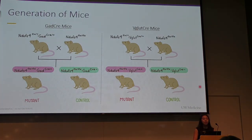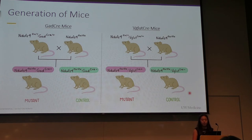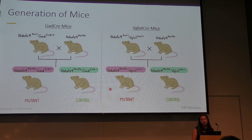To test our proposed hypothesis, we generated mutant and control GAD-CRE and VGLUT-CRE mice. Using LOXP-CRE technology, which knocks out the gene of interest when CRE is present, we generated a GAD-CRE mutant mouse with the NDUFS4 knockout, as well as a control mouse without the knockout, since CRE is not present in the control. Similarly, we generated a VGLUT-CRE mutant mouse with the NDUFS4 knockout, as well as a control without the knockout, because CRE is not present.